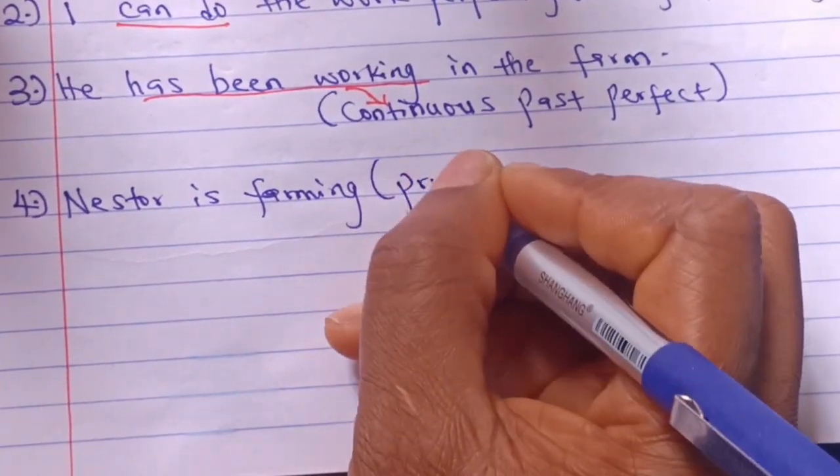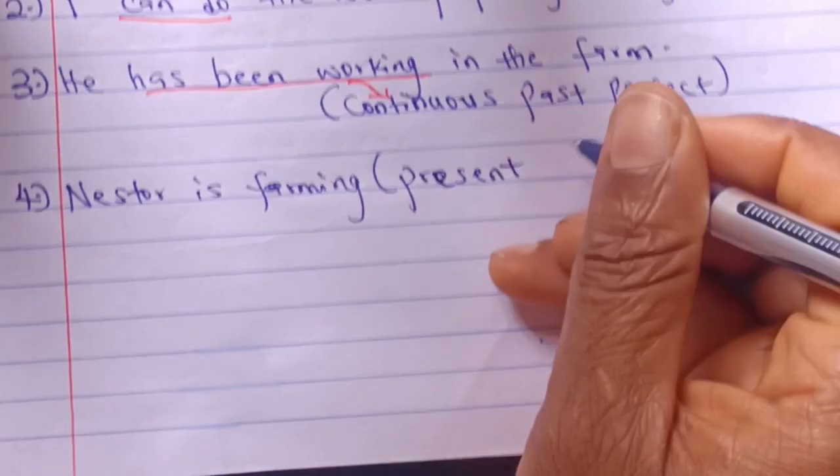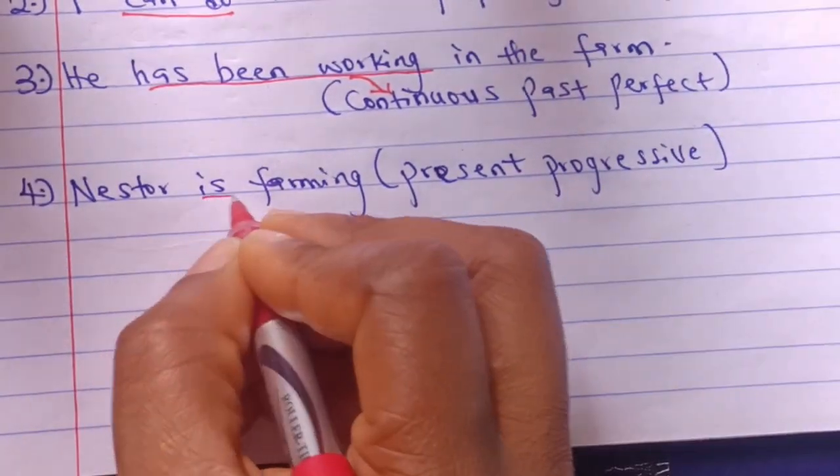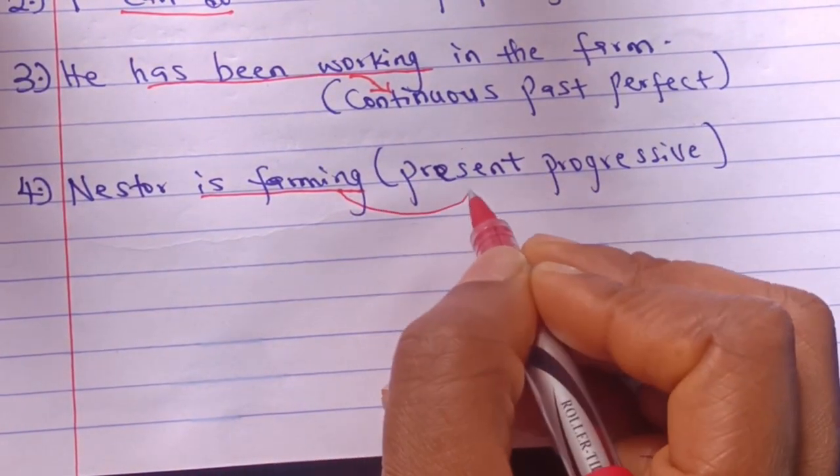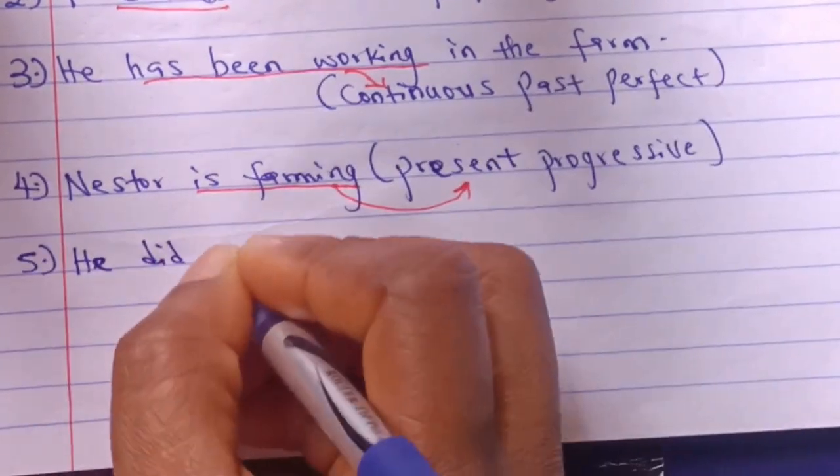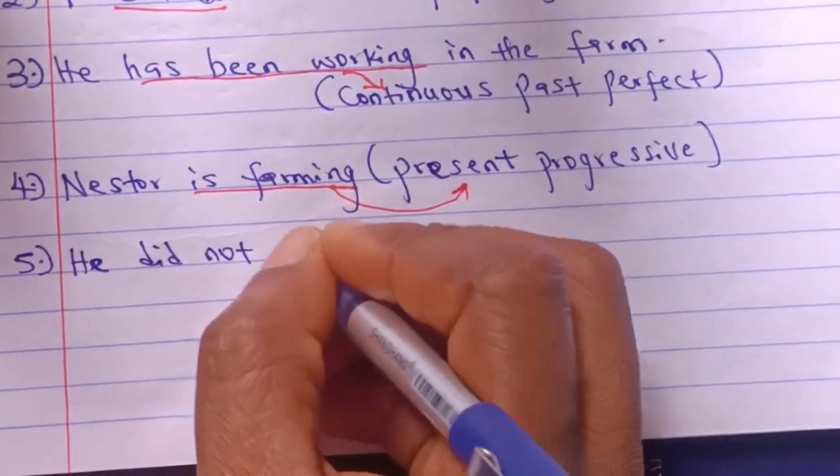Number four: Nestar is farming. The verb phrase is is farming and it shows present progressive.